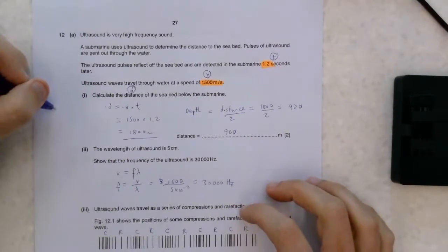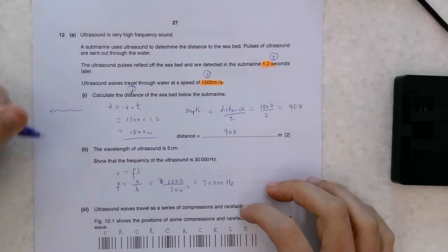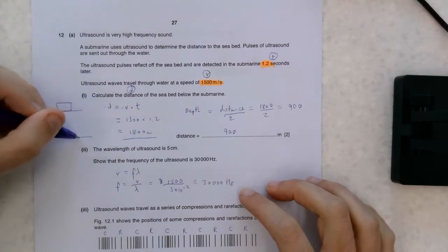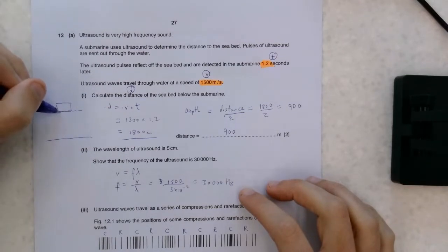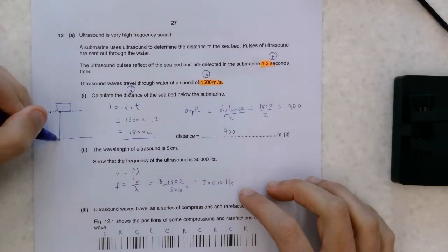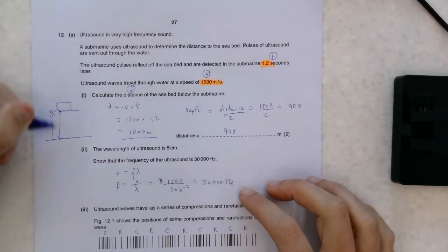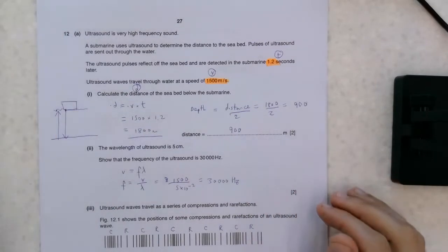When you're measuring a distance using sonar or using any kind of echo, if your boat is up here and this is the bottom of the ocean, our time begins when this wave comes out. It travels down, and then it travels back up again, obviously along the same line. I'm drawing them apart so that you can see them a bit more easily.